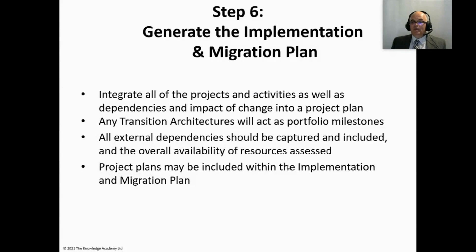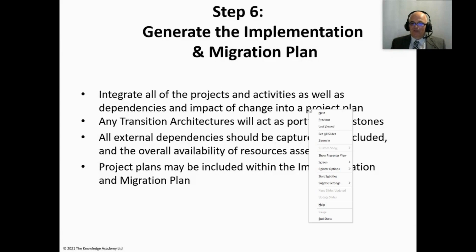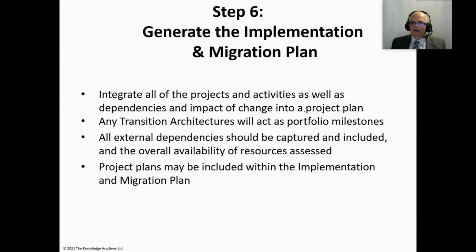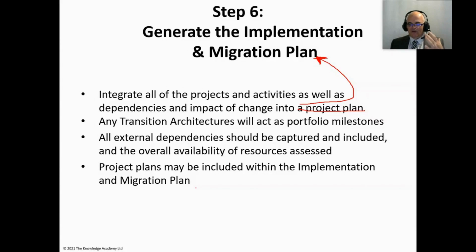Step six: generate the implementation and migration plan. 'Generate' may not be the best word — 'finalize' would be better, since we started creating it in Phase E. The step involves integrating all projects, activities, dependencies, and impacts of change. Rather than calling it a 'project plan', it would be better described as the implementation migration plan, which is quite often a program of works. Transition architectures will access portfolio milestones, and individual project plans may be included within the implementation migration plan.